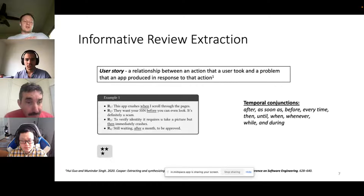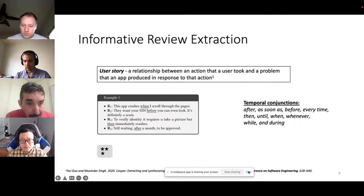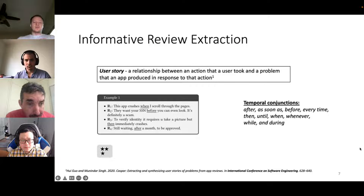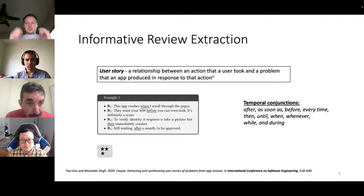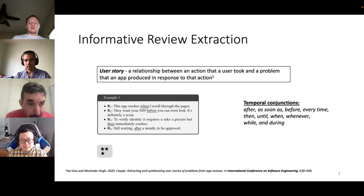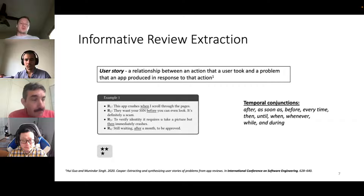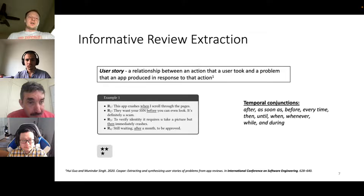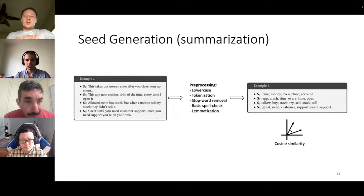In the first step, to increase accuracy and remove noisy reviews, we adopt an approach from a 2020 paper based on detecting user stories in app reviews. Reviews containing user stories are more likely to be informative. Additionally, we retain only one- or two-star reviews, as these are more likely to contain useful feedback.